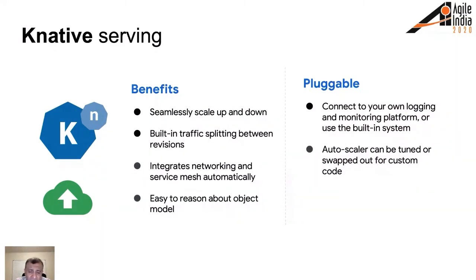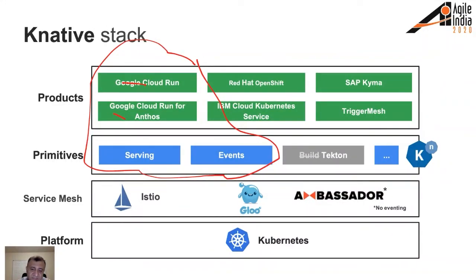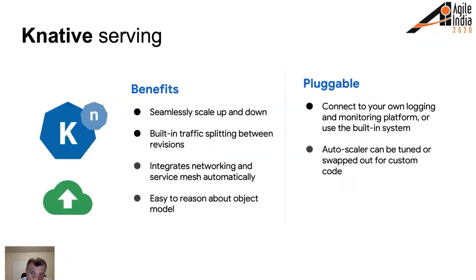Knative Serving integrates with the network and service mesh, which is the underlying layer — transparent to you, automatically handled. It has an easy-to-reason object model where you can see services as different objects. Looking back at the stack, it's not one system but a set of loosely coupled components you can mix and match. You can use serving without eventing, or use your own event framework. You can use serving and eventing but swap out Istio for something else. Serving version one and eventing version two don't need to match. It's a pluggable system.